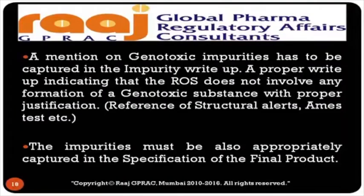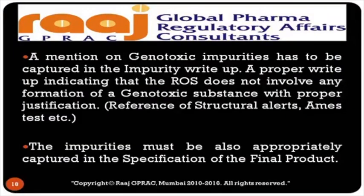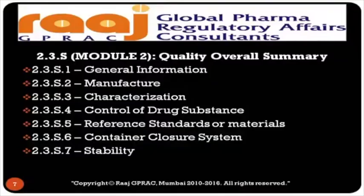Genotoxic impurities must be captured in the impurity write-up. A proper write-up indicating that the route of synthesis does not involve formation of any genotoxic substance — with proper justification referencing structural alerts and the Ames test — is required. As per ICH M7, genotoxic impurities are becoming a most important part of any dossier. This is because the health authority's main objective is to protect public health, and you must prove that your product is safe for human consumption. Impurities must also be appropriately captured in the specification of the final product.